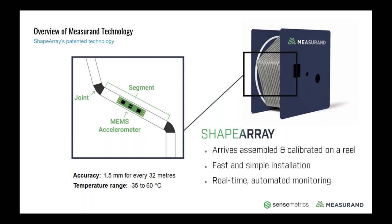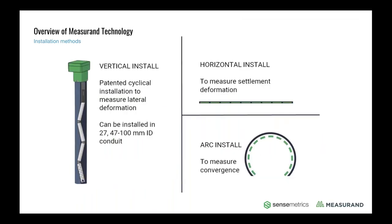Essentially the Shape Array is an instrumented flexure — rigid segments separated by flexible joints. Inside each rigid segment is a MEMS accelerometer measuring tilt in three dimensions plus a temperature sensor. It arrives completely calibrated, shipped on a reel, built to the ordered length, so there's no on-site calibration or assembly — it's ready to be installed as soon as you arrive on site.